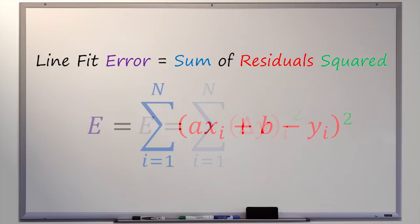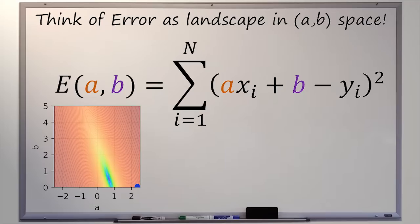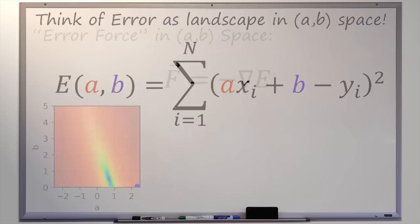We can write out our residuals — I'm showing the negative of the residual, but it gets squared so it's fine. I like to write it this way because it leads to a prettier equation later. This is our equation for the error of a line fit. You can think of this as an error landscape in AB space: if you focus on a and b as variables, and imagine that for some given dataset x sub i and y sub i these are just numbers you sum over — varying a and b generates varying errors, and that's what generates our error landscape.